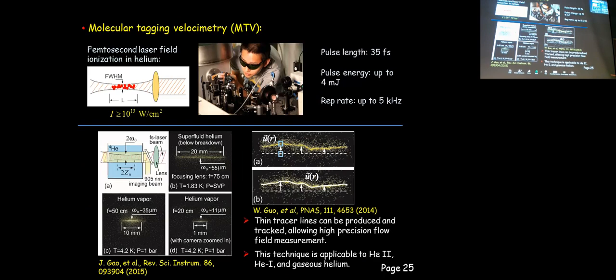More recently at Florida, we developed a very powerful molecular tagging velocimetry (MTV) technique. The concept is to focus a femtosecond laser through the fluid — in the focal region, the laser field is strong enough to ionize or excite the helium atoms, producing many molecules along the laser path. This writes a trace line in the superfluid helium. We can easily control the thickness and length of the trace line — typically a length of about 1 cm and thickness of about 100 microns, though in principle we can get down to 10 microns thickness. By allowing the trace line to move with the normal fluid for some time, it drifts and distorts, and from the displacement we calculate the local velocity field.